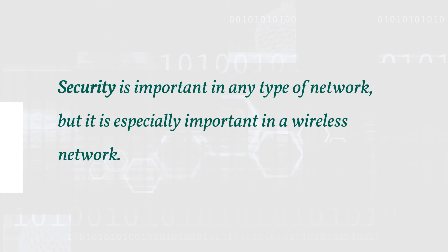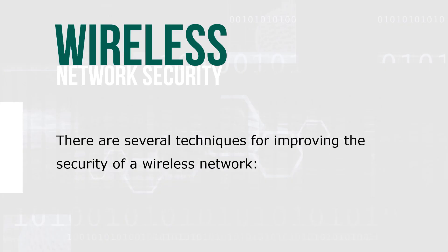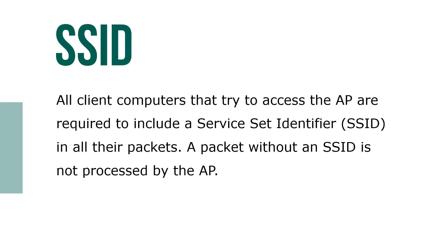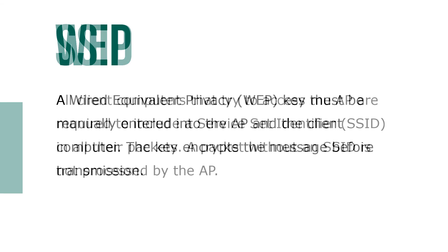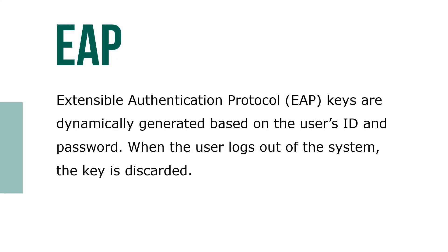Security is important in any type of network but is especially important in a wireless network. Wireless signals can be interrupted and are susceptible to the same DoS attacks to which wired networks are susceptible. Techniques for improving wireless network security include SSID, where all client computers trying to access the access point (AP) must include a Service Set Identifier in all their packets — a packet without an SSID is not processed by the AP. A Wired Equivalent Privacy (WEP) key must be manually entered into the AP and the client computer; this key encrypts the message before transmission. Extensible Authentication Protocol (EAP) keys are dynamically generated based on the user's ID and password; when the user logs out, the key is discarded.